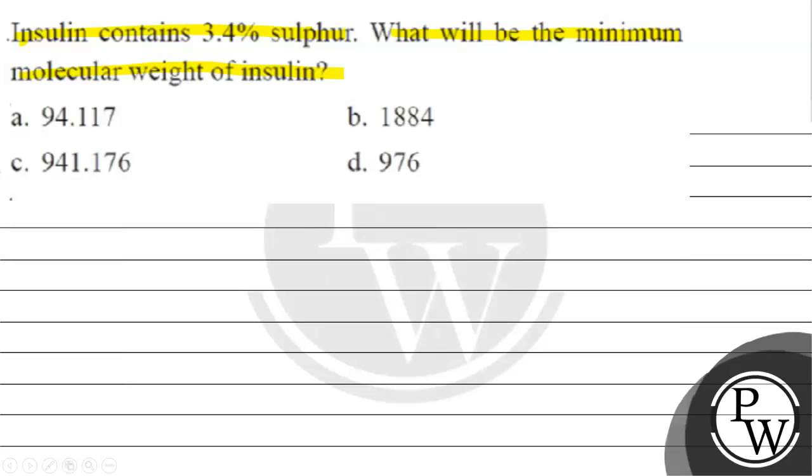Option A, we have 94.117. Option B, we have 1884. Option C, 941.176. Option D, 976.